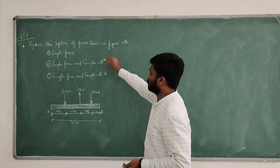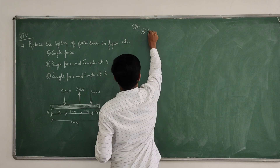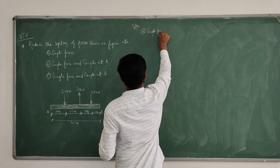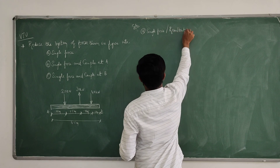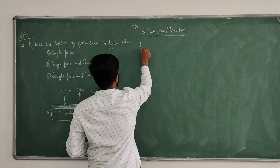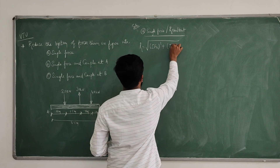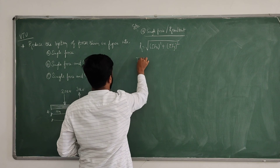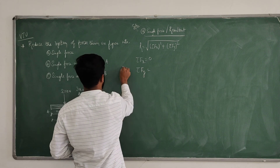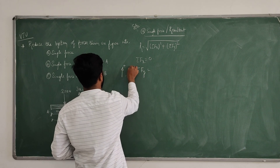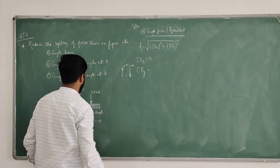The first part is the single force, which is nothing but the resultant. How to compute the resultant? We know that R equals the square root of (σFx)² plus (σFy)². In this case, σFx equals zero because there are no horizontal forces. Now for σFy, the summation of vertical forces: all upward forces are positive and all downward forces are negative.